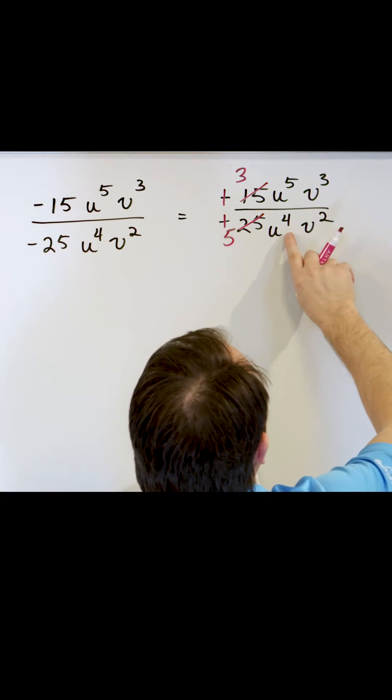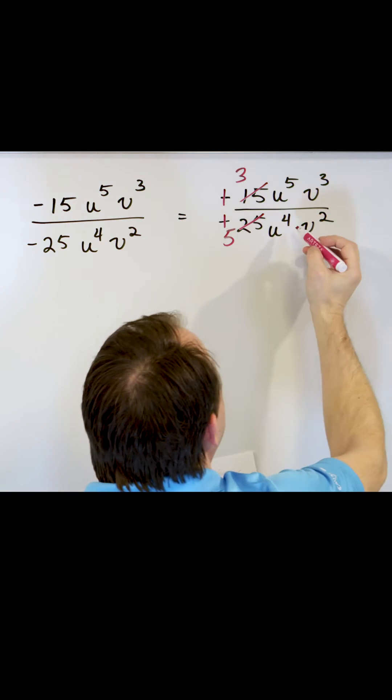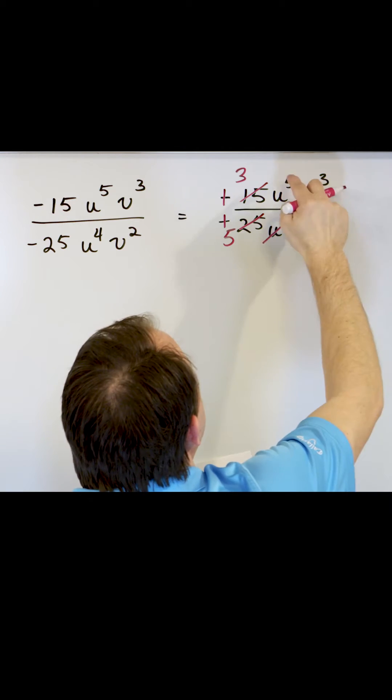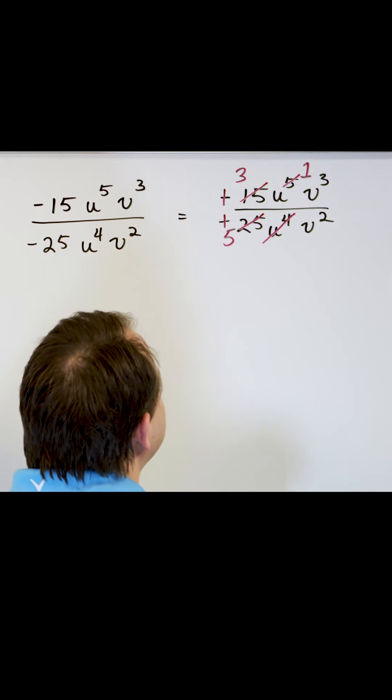And then we look at the U's. There's 4 on the bottom and 5 on the top. Everything's multiplied, so I cancel all four of these U's. On the top, I only have one left, so I only strike through the 5 and I write the number 1 next to it.